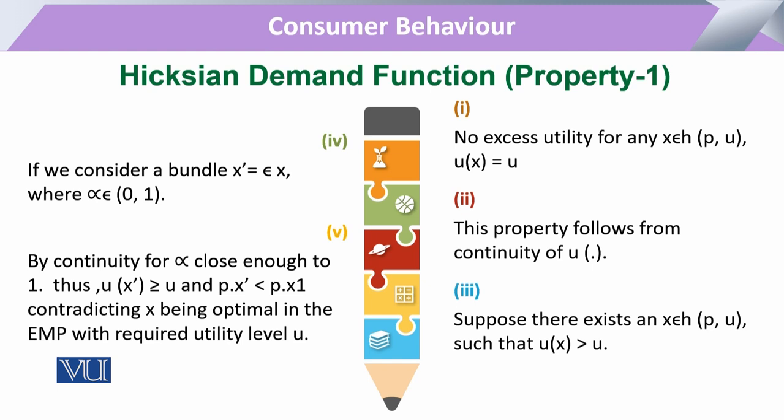Through a continuous process, when we select a bundle, the consumer can move the scalar value closer and closer to 1. When it approaches near 1, the utility for X-prime becomes greater than the previous utility. If this property prevails, the price attached to bundle X-prime — that is, price multiplied by X-prime — gives the expenditure function.